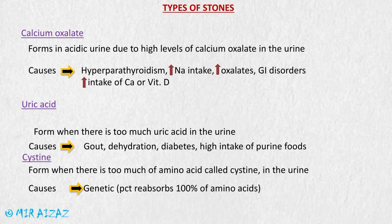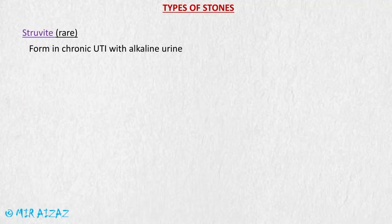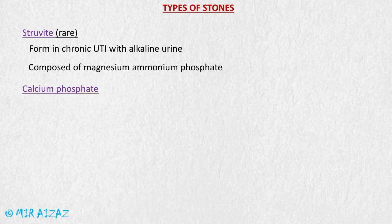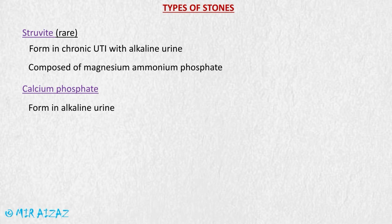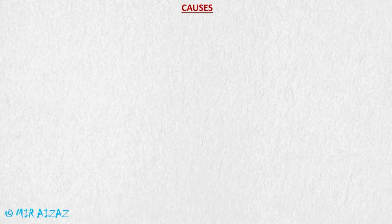The next type is struvite stones, which are quite rare and form in patients suffering from chronic urinary tract infections with alkaline urine. They are composed of magnesium ammonium phosphate. The final type is calcium phosphate stones, which also form in alkaline urine and in patients with renal tubule issues.